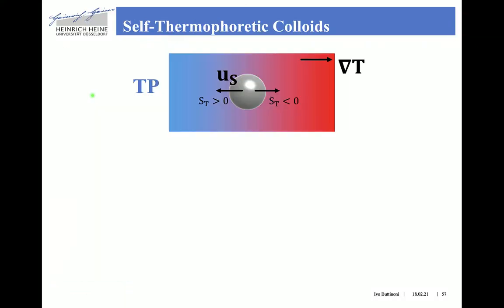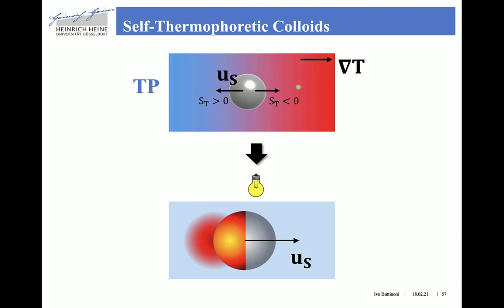We have now come to the last type of autophoretic particle: particles that are self-driven due to self-thermophoresis. In classical thermophoresis, colloidal particles move toward a colder or hotter region depending on the sign of the Soret coefficient. Self-thermophoretic particles are able to generate themselves a thermal gradient in the surrounding under external illumination, because they are partly coated with a light-absorbing material.